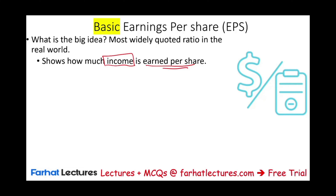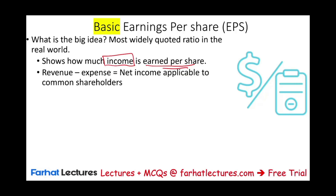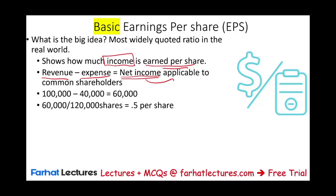Let's look at a very simple example to start illustrating the concept. The company generates revenues and they incur expenses. Revenues minus expenses equal net income. We will assume that this company has only common shareholders, so all the income is applicable to — meaning belongs to — the common shareholders. Let's use some numbers: $100,000 in revenues minus $40,000 in expenses gives us net income of $60,000. For the sake of illustration, let's assume this company has 120,000 shares outstanding.